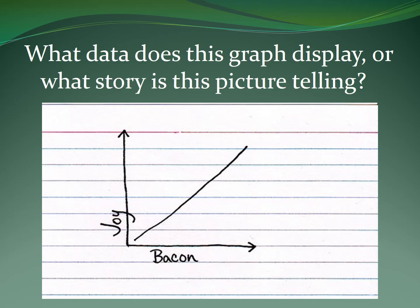For example, what data does this graph display or what story is this picture telling? I see that we have bacon on the x-axis and it is increasing from left to right and joy is on the y-axis from bottom to top it is also increasing. So this tells me as there's more bacon, joy is increasing.